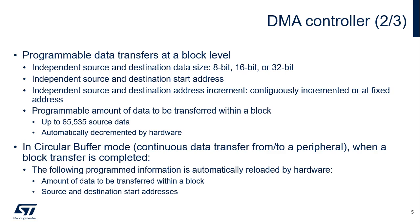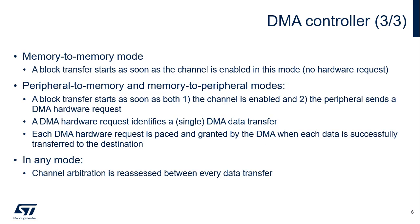In circular buffer mode, continuous data transfer from or to a peripheral occurs when a block transfer is completed. The programmed amount of data to be transferred within a block is automatically reloaded by hardware, as well as the source and destination start addresses. In memory-to-memory mode, a block transfer starts as soon as the channel is enabled with no hardware request. Whereas in peripheral-to-memory and memory-to-peripheral modes, a block transfer starts as soon as both the channel is enabled and the peripheral sends a DMA hardware request.